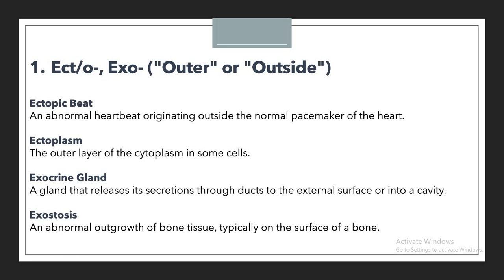An exocrine gland is a gland that releases its secretion through the ducts to the external surface or into a cavity — the word 'external' relates to outside, which is why we use the prefix EXO. Exostosis means an abnormal outgrowth of bone tissue typically on the surface of the bone, again related to an outside position, so we use EXO.